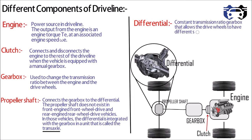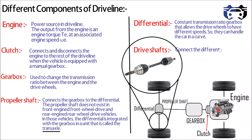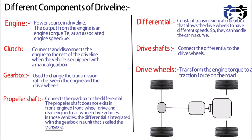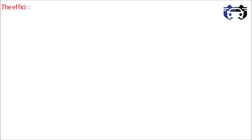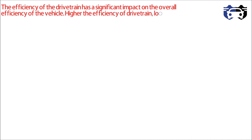Fifth is the differential — it is a constant transmission ratio gearbox that allows the drive wheels to have different speeds so they can handle a car in a curve. Sixth is the drive shaft — it connects the differential to the drive wheels. Last are the drive wheels — they transform the engine torque to traction force on the road. The efficiency of the drivetrain has a significant impact on the overall efficiency of the vehicle; higher drivetrain efficiency means lower fuel consumption.